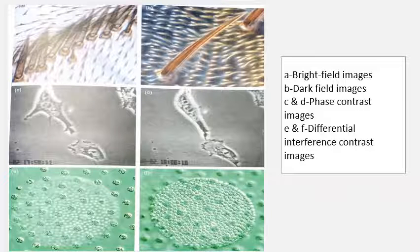Here we can see different images captured by different microscopes. The first picture A is captured by a bright field microscope and B by a dark field microscope. The bristles on the surface of a fly appear dark on a white background in the bright field image, while in the dark field image B, they appear as white bristles on a black background.